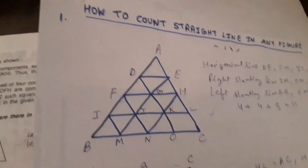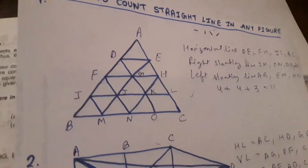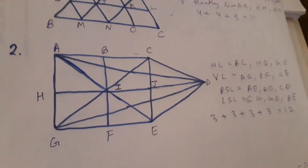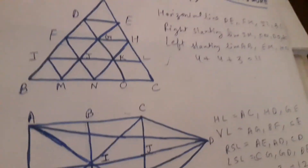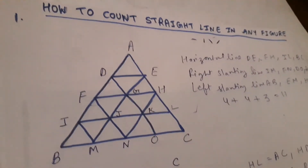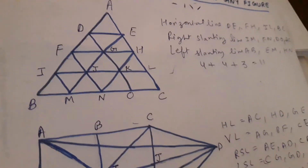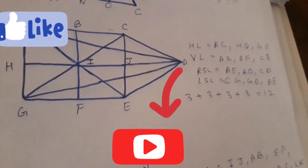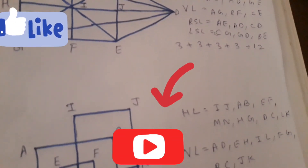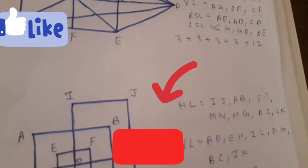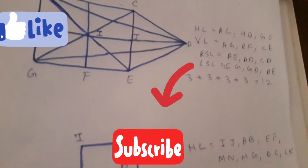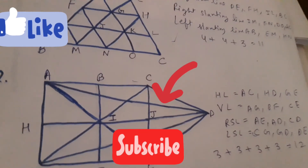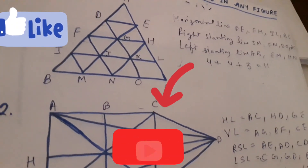We got all three answers: the first figure answer is 11, the second figure answer is 12, and the third figure answer is 13. This is the step-by-step method of how to count straight lines in any given figure. In any figure you can count straight lines this way. Hope you liked the video — please like, comment, and subscribe to my channel. Press the bell icon to get more math videos like this. Thanks for watching.